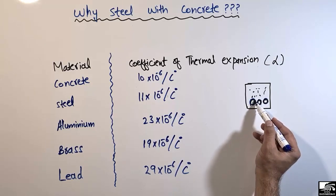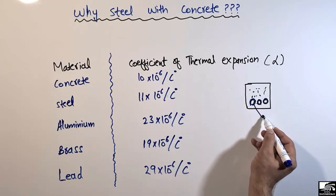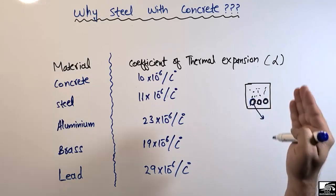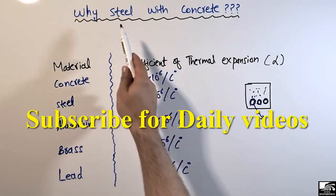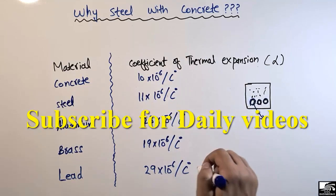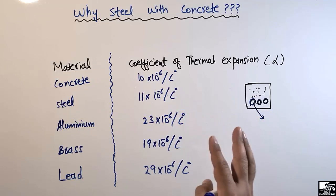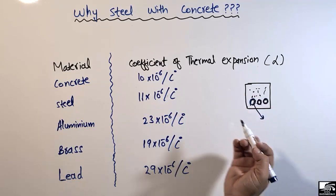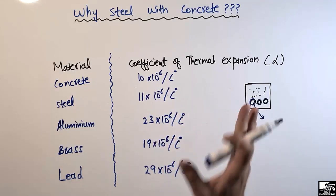So why do we use the steel bar? Because the steel bar has a similar coefficient of thermal expansion to that of concrete. That is the main reason why we provide steel inside the concrete — because both materials have an almost similar coefficient of thermal expansion. This helps them maintain good bond strength throughout the life of the structure.